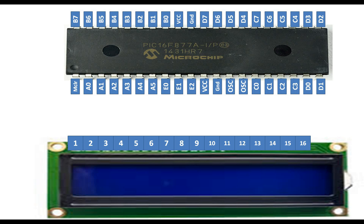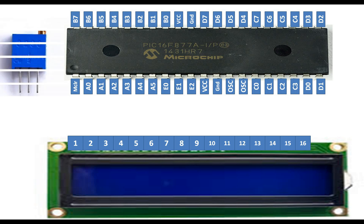This is our PIC 16F877A microcontroller — the 40-pin DIP version. To interface this LCD with a PIC you need a 3-pin 10 kilohm variable resistor. This will be used to adjust the contrast of the LCD. Let me show you how to wire these up.